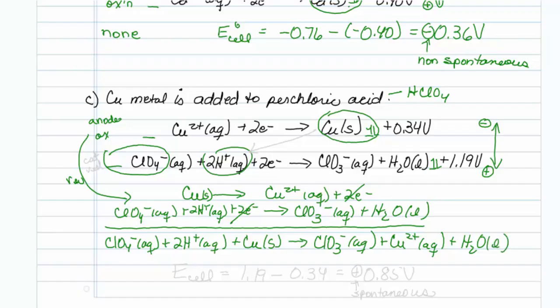Now I know it's spontaneous because I see the electrons go downhill, but you can always check it if you want with your E cell. I've decided that my chlorate is my cathode, so that is 1.19. My copper is my anode, so that's -0.34.